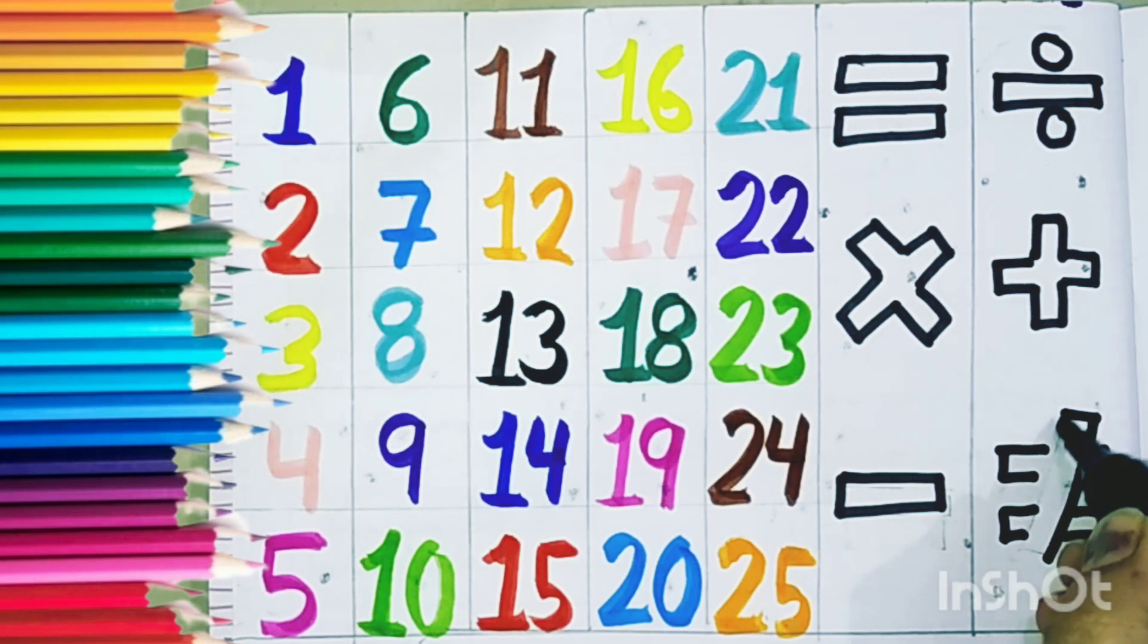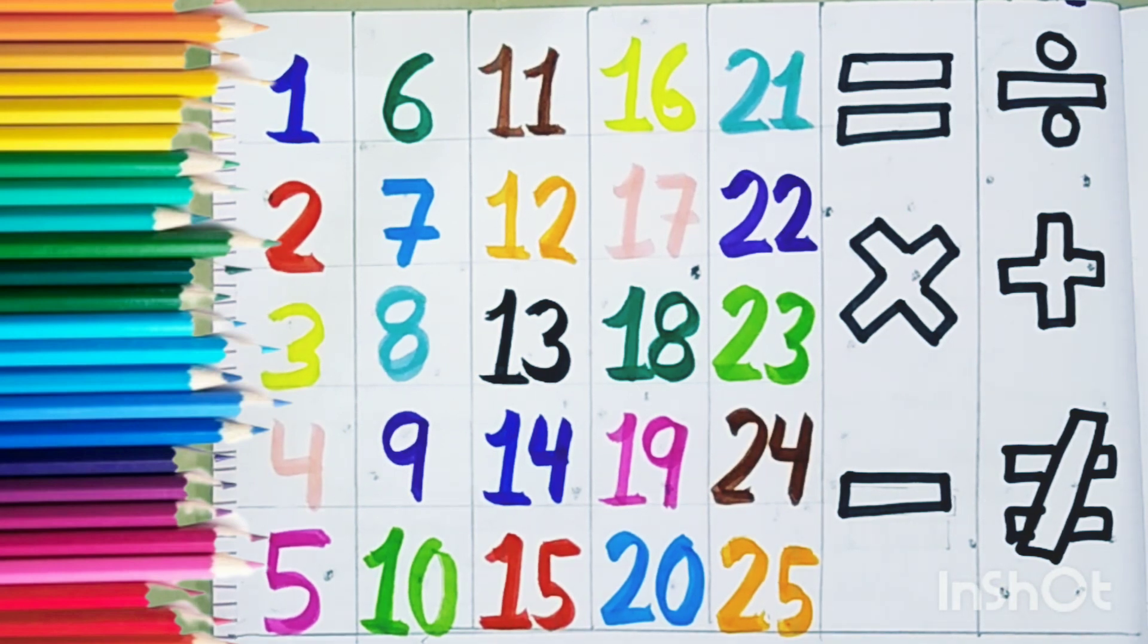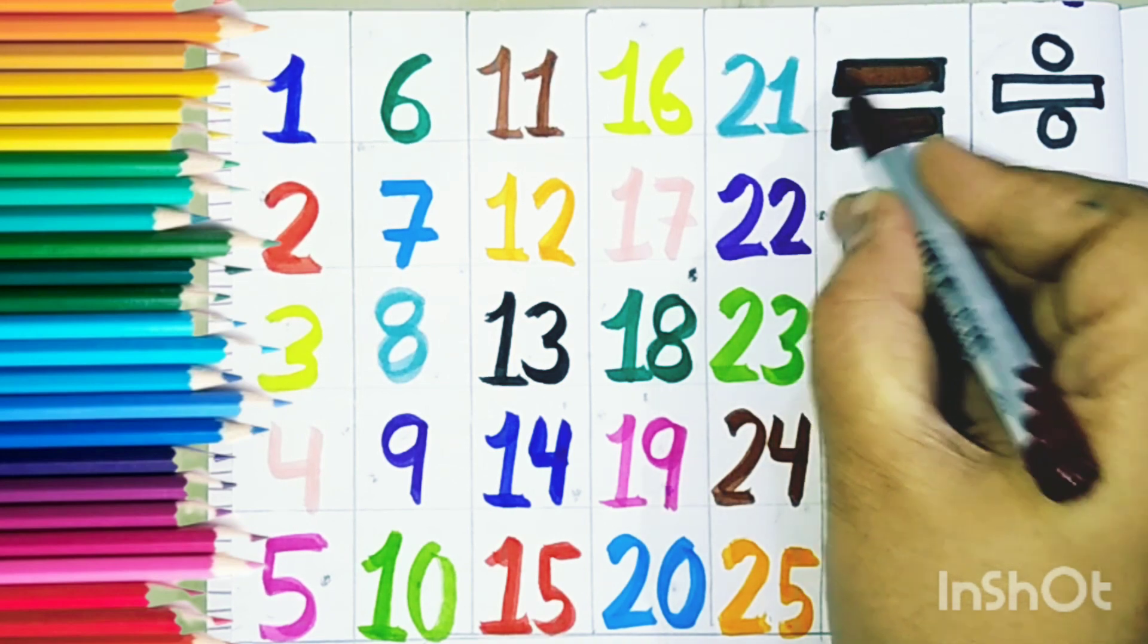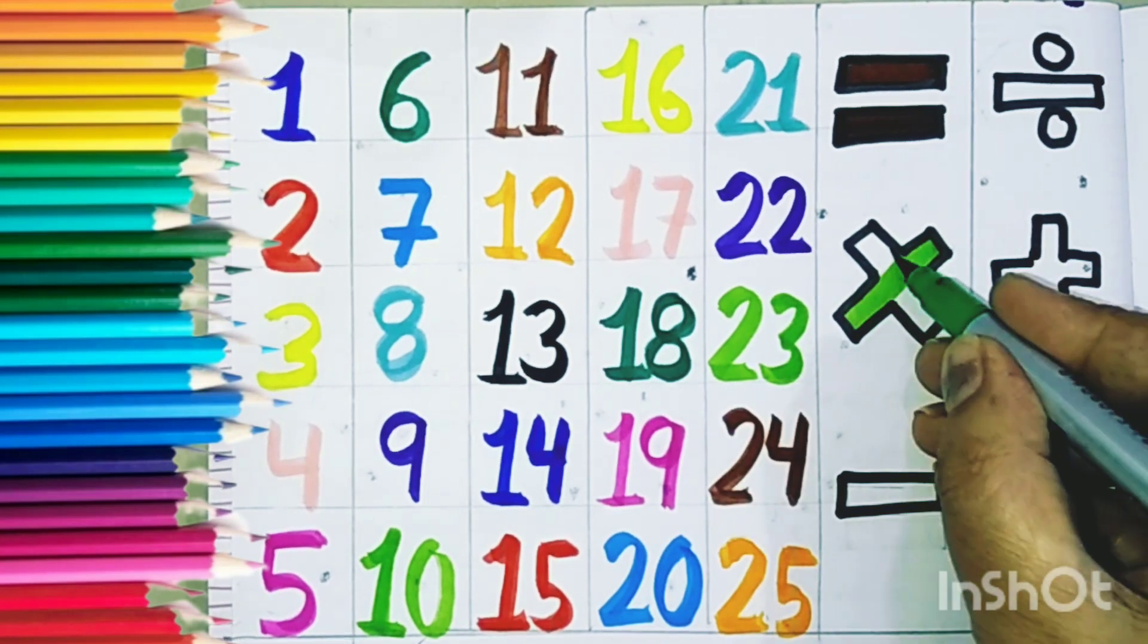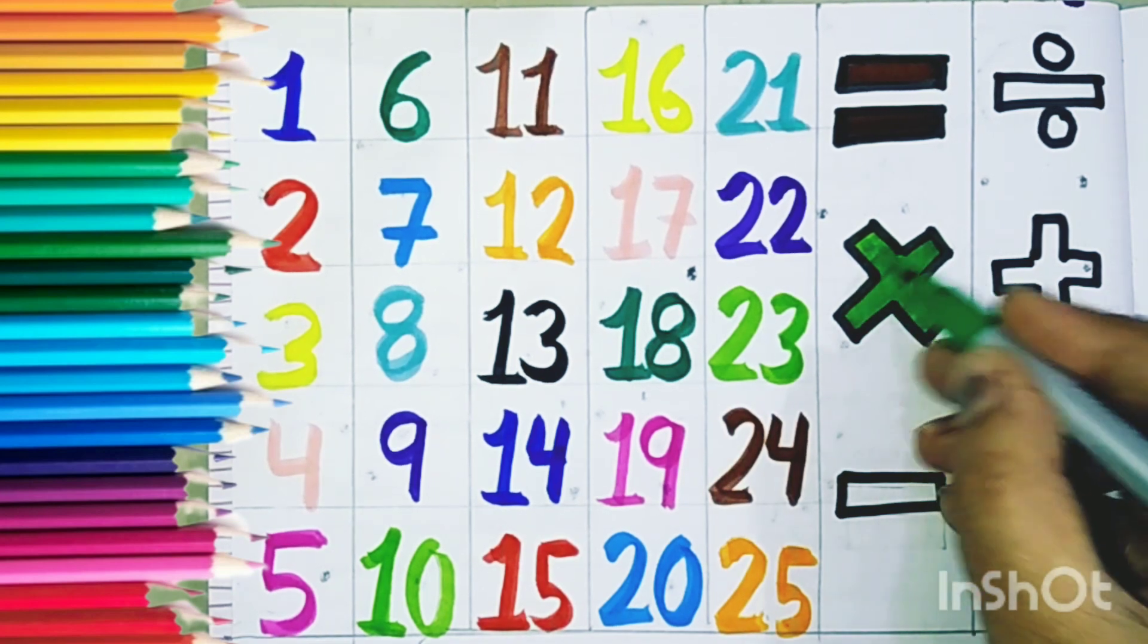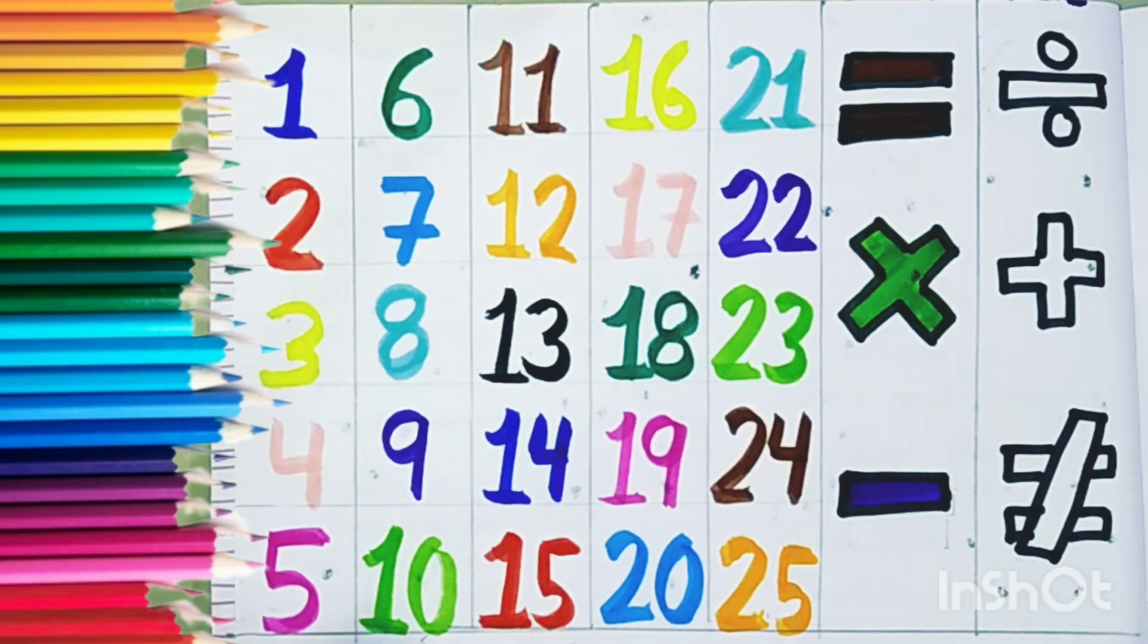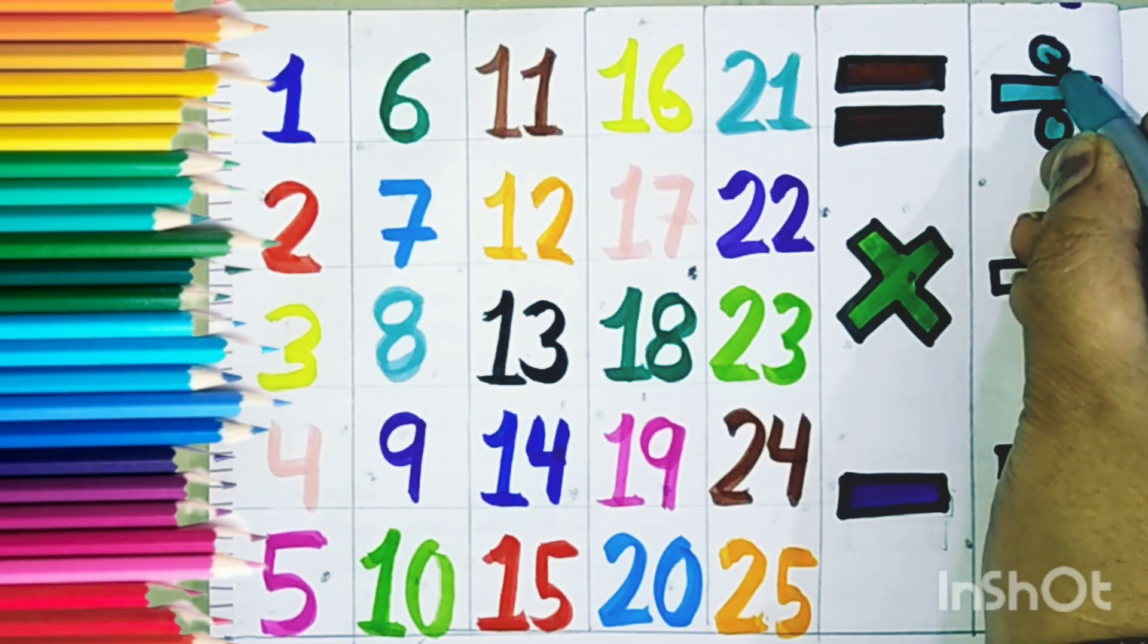Now let us color. Brown color in equal to. Green color in multiply. Indigo color in minus. And sea green in divide.